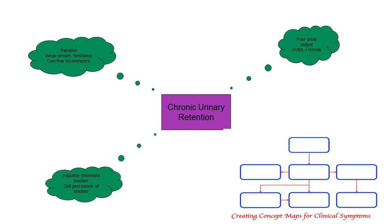We're first going to look at chronic urinary retention. This is poor urine output; it can be painless and they can have hesitancy. They can have overflow continence. This occurs over a significant period of time and is usually less painful because it gradually builds up.